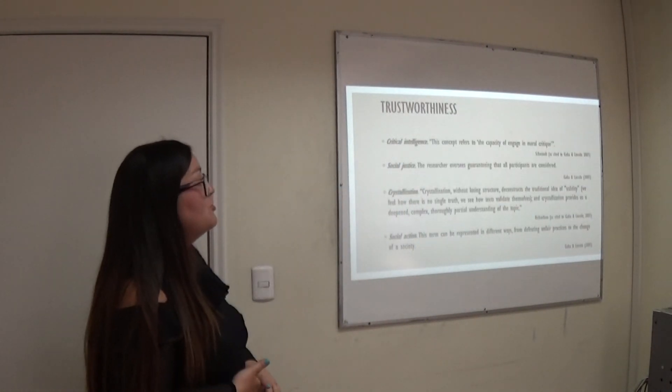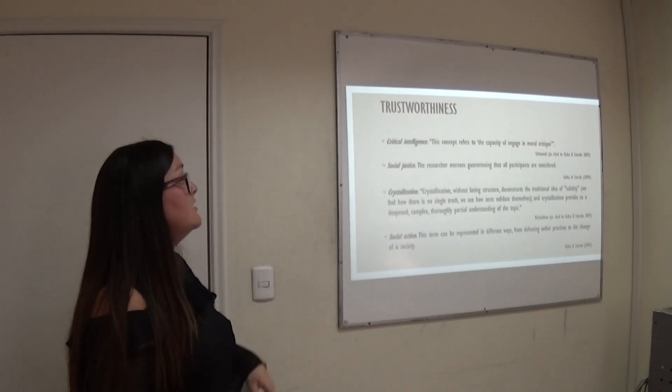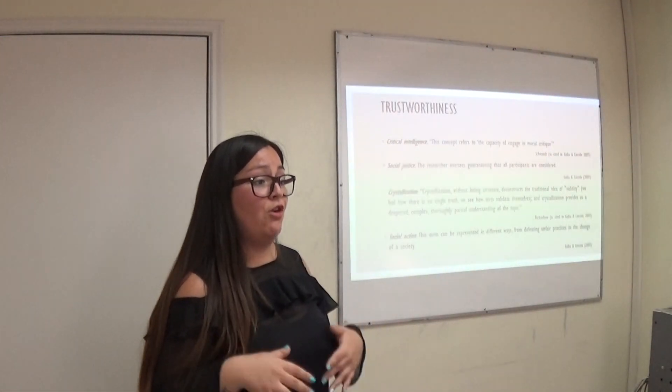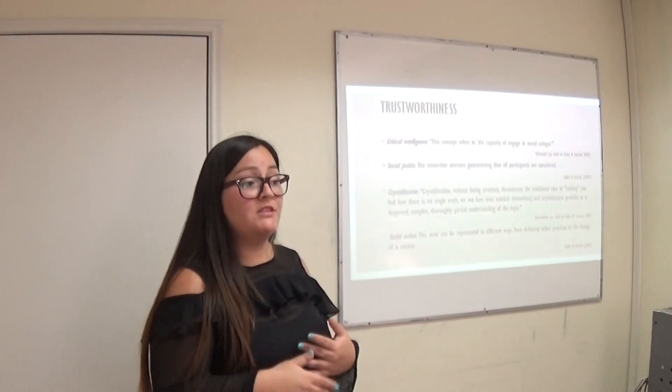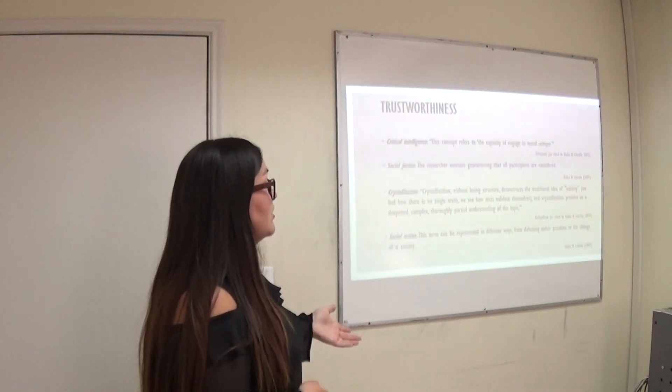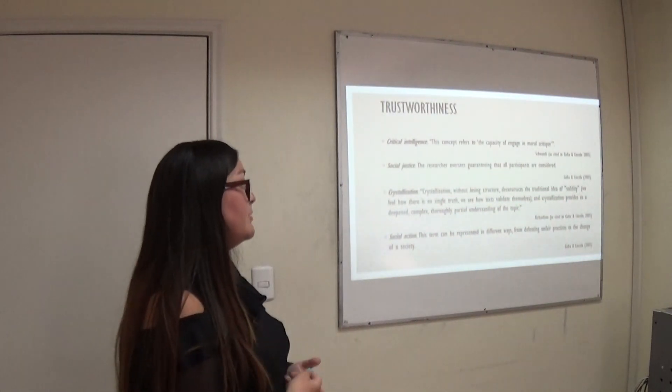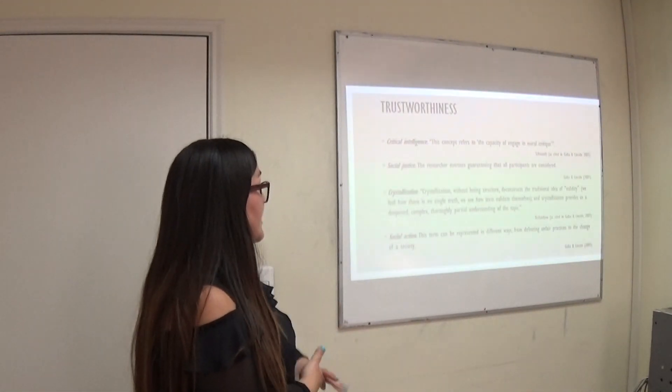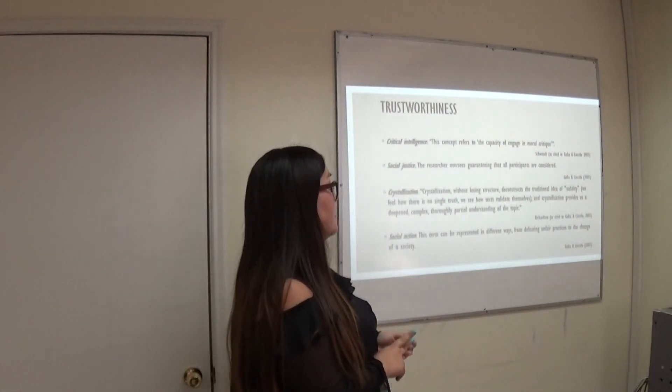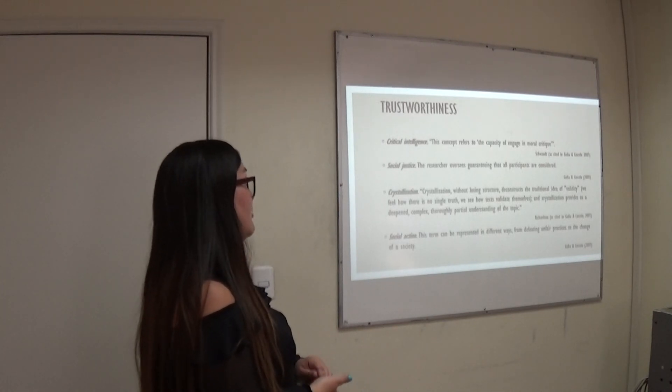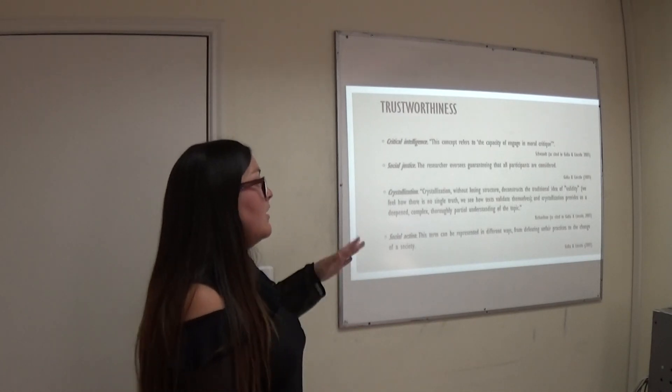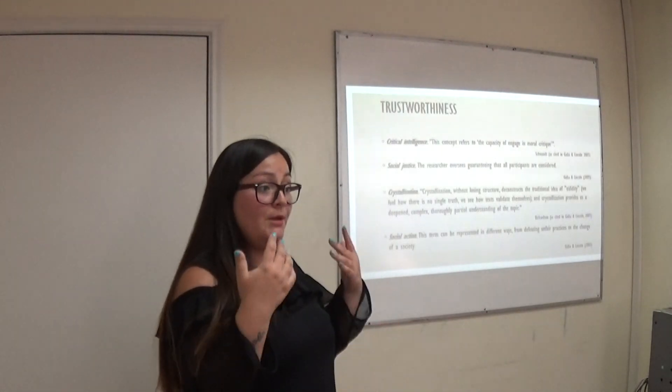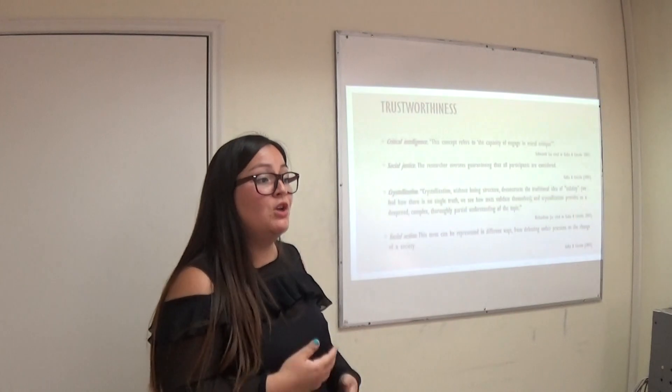Regarding trustworthiness, Schwent, a study in Gubal-Lincoln states that for critical intelligence, this concept refers to the capacity of engaging more critique. As the tutor teacher was focusing on other abilities rather than writing, it was implemented by the activities. And for social justice, Gubal-Lincoln states that the researcher oversees guaranteeing that all participants are considered. This is covered by the use of the interviews since they were applied to each student. Regarding crystallization, crystallization without losing structure, deconstructs the traditional idea of validity. And crystallization provides us a deep and complex theory partial understanding of the topic, as stated by Richardson. In this case, since we wanted to observe the possible impact, it is not granted that there was a possible impact. So the assumption may vary.